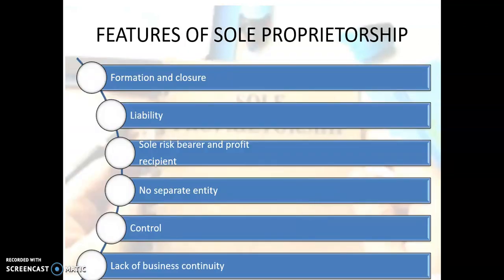Now let us look at the features of sole proprietorship. The key points to remember are: formation and closure, liability, sole risk bearer and profit recipient. Students, you must remember the points first, then practice writing on your own — this is important not just for Class 11 and 12 but for your future as well. Start writing on your own as soon as possible.